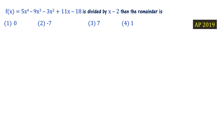f of x equal to 5x to the power 4 minus 9x cubed minus 3x squared plus 11x minus 18 is divided by x minus 2. We are asked to find the remainder. This was asked in AP policy 2019.